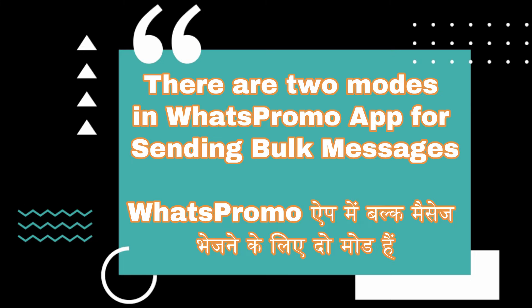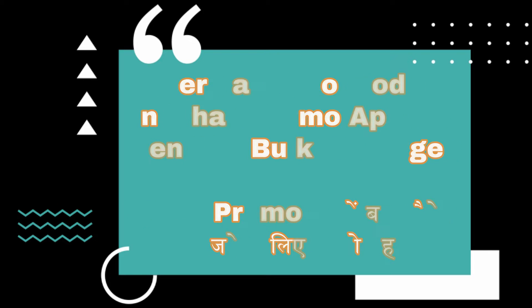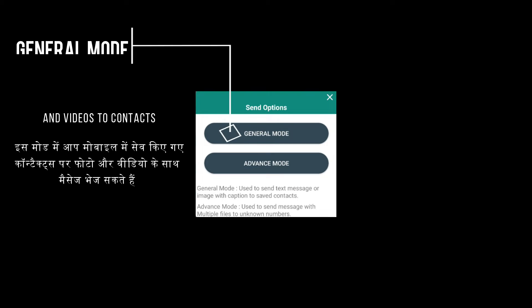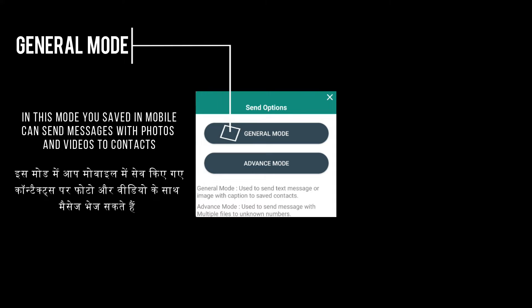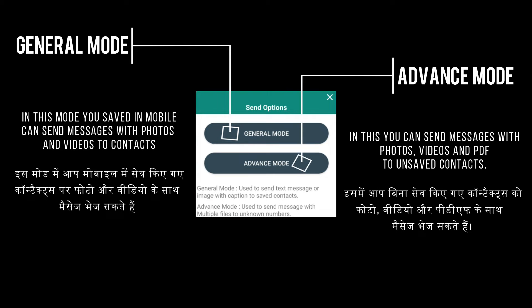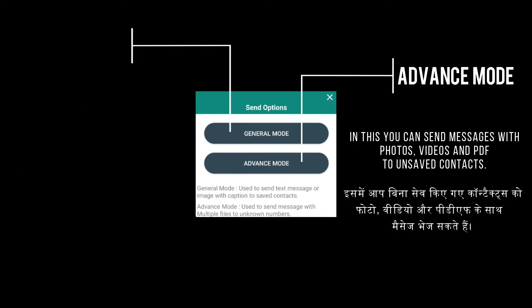There are two modes in WhatsApp Promo app for sending bulk messages. The first option is General Mode, where you can send messages with photos and videos to saved contacts. The second option is Advanced Mode, where you can send messages with photos, videos, and PDFs to unsaved contacts.